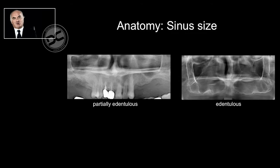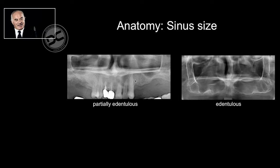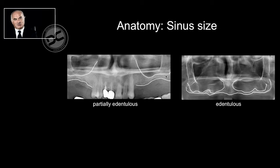The first point we have to consider is the sinus size. According to the degree of edentulism, the sinus size is different. In partially edentulous patients where some front teeth remain, it is much smaller than the one we find in the fully edentulous patient. This is very important to consider because the sinus size determines the medial wall position.